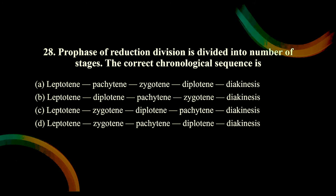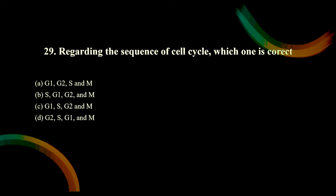Prophase of reduction division is divided into a number of stages - give the correct chronological sequence. Option A has leptotene then pachytene - wrong, zygotene should come second. Option B has leptotene then diplotene - wrong. Option C skips to pachytene as third but misorders. Option D gives leptotene, zygotene, pachytene, diplotene, diakinesis. The correct sequence is option D.